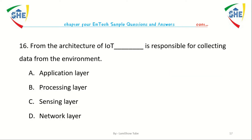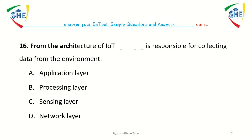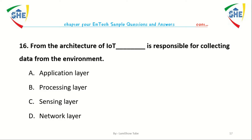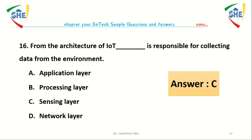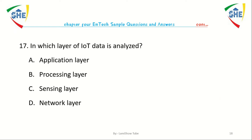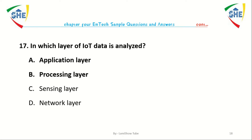Question number sixteen: From the architecture of Internet of Things, dash is responsible for collecting data from the environment. A. Application layer, B. Processing layer, C. Sensing layer, D. Network layer. Question number seventeen: In which layer of Internet of Things is data analyzed? A. Application layer, B. Processing layer, C. Sensing layer, D. Network layer.